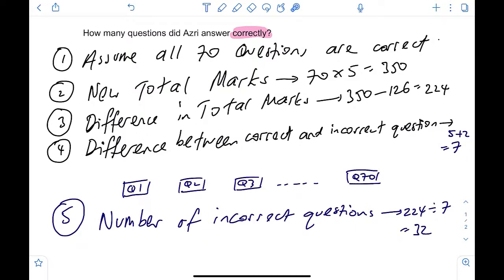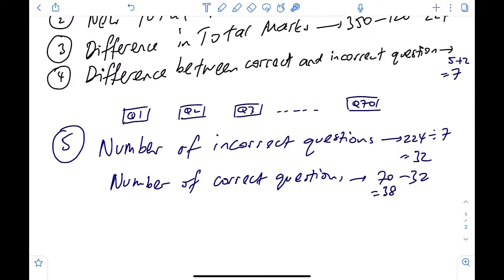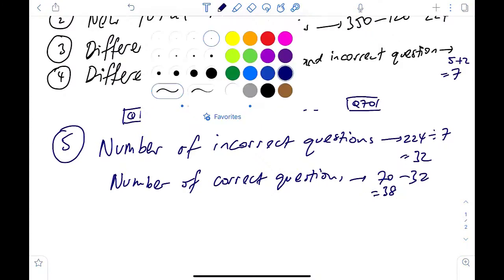So if you want to know how many questions are done correctly, number of correct questions, this will be 70 questions in total minus those incorrect ones, you will get 38 correct questions.